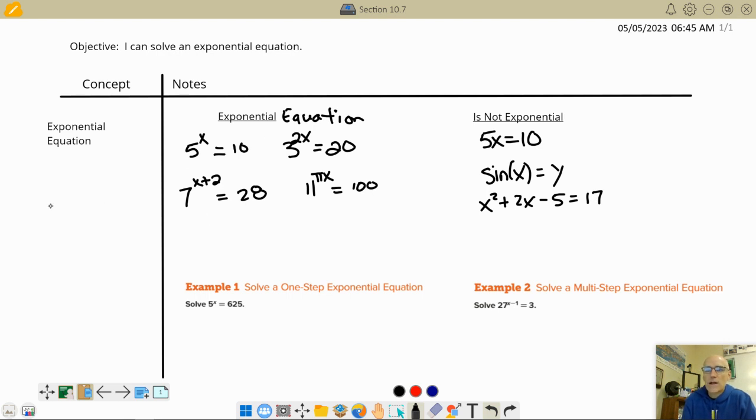So what's in common with these guys? You're going to have a base. And the base has to be a positive number. That has to be a positive number. And then you're going to have an exponent. And in the exponent is where the variable is located. That's what makes it an exponential function. So the x is going to be up in the exponent. And then it's going to equal some number over here. Or it could be like another variable like y. So that's what makes it an exponential equation.